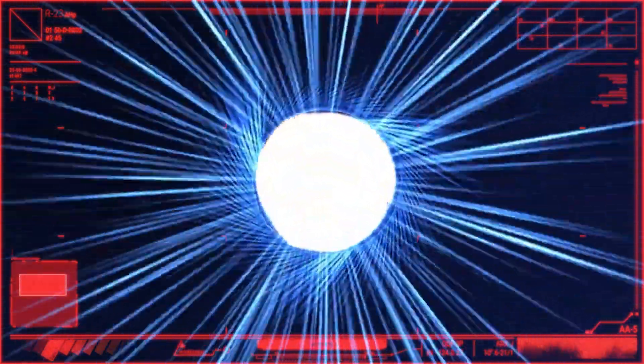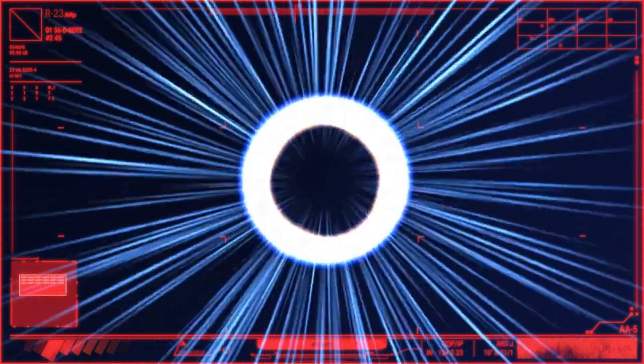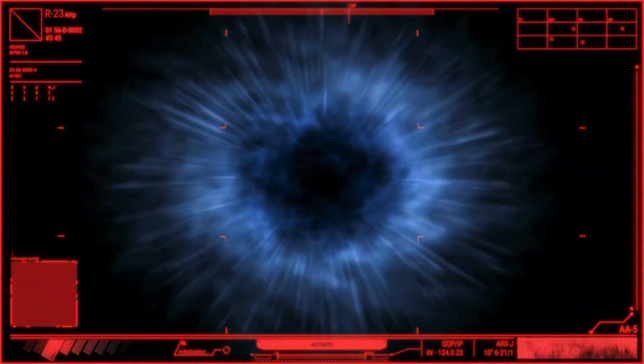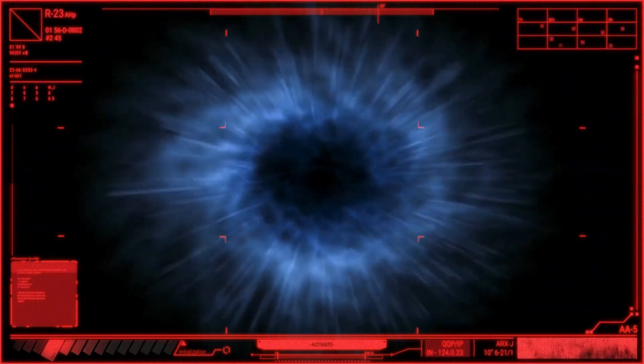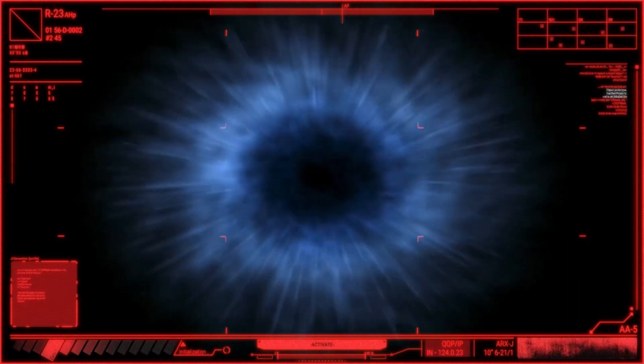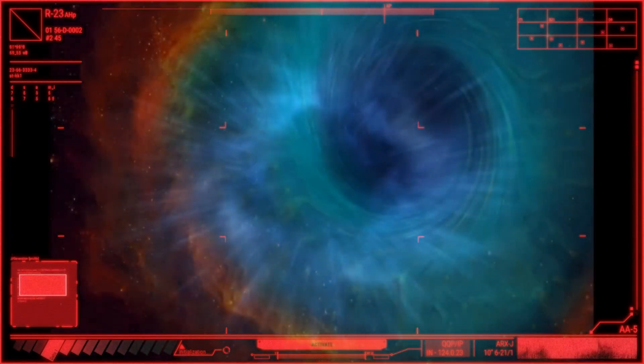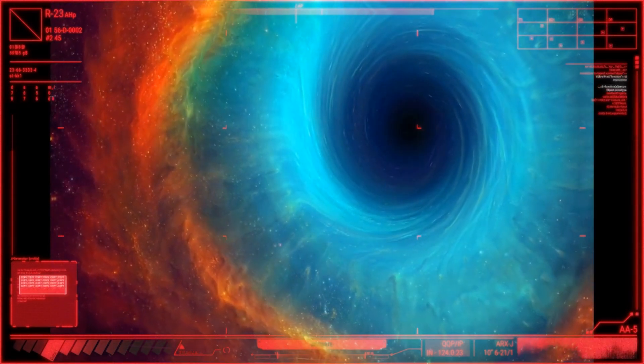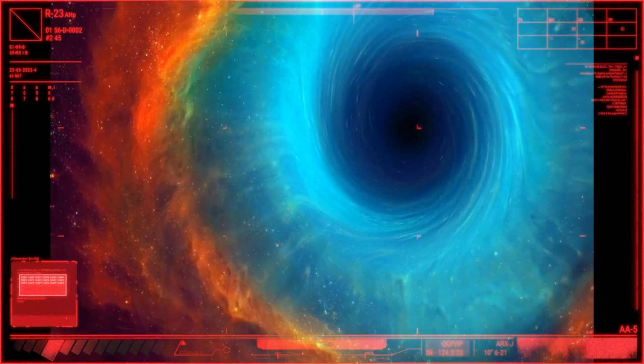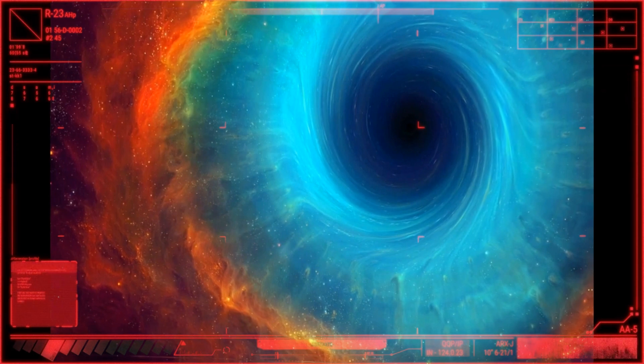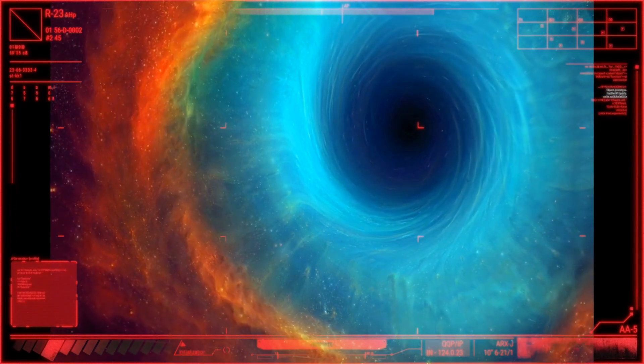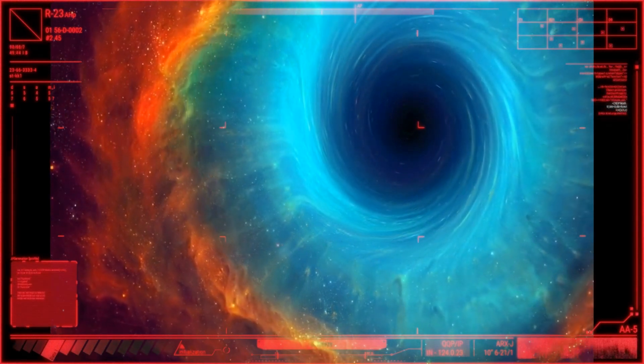Event horizon. Similar to the non-rotating black hole, the rotating black hole also has an event horizon. It is the boundary beyond which nothing, including light, can escape the gravitational pull of the black hole. However, the event horizon of a rotating black hole is slightly different from a non-rotating black hole and is referred to as the static limit. Inside the static limit, space is dragged by the rotation of the black hole, affecting the movement of objects and light.